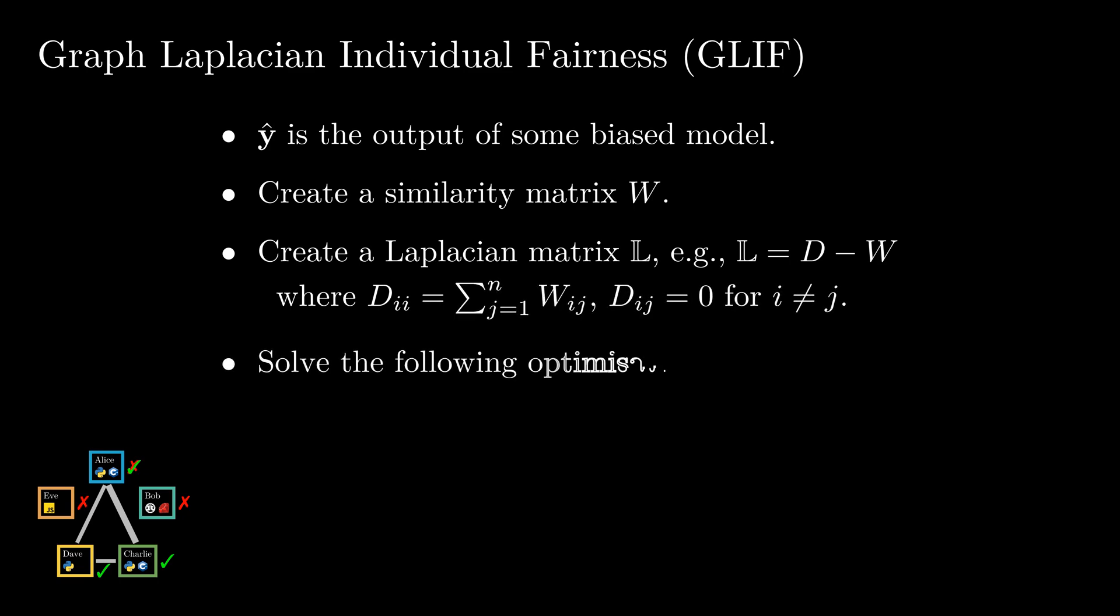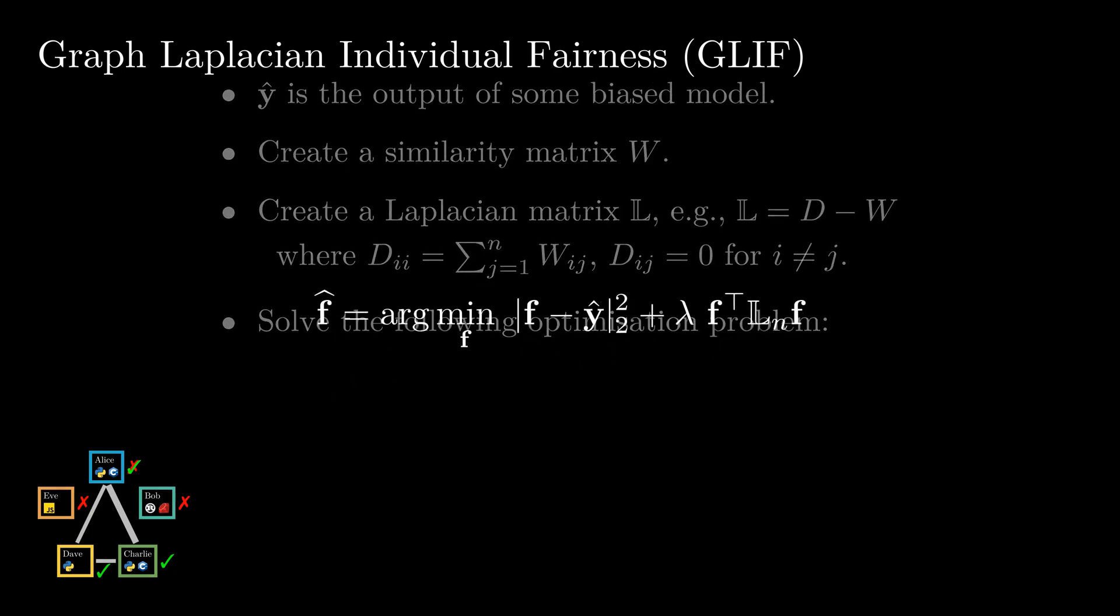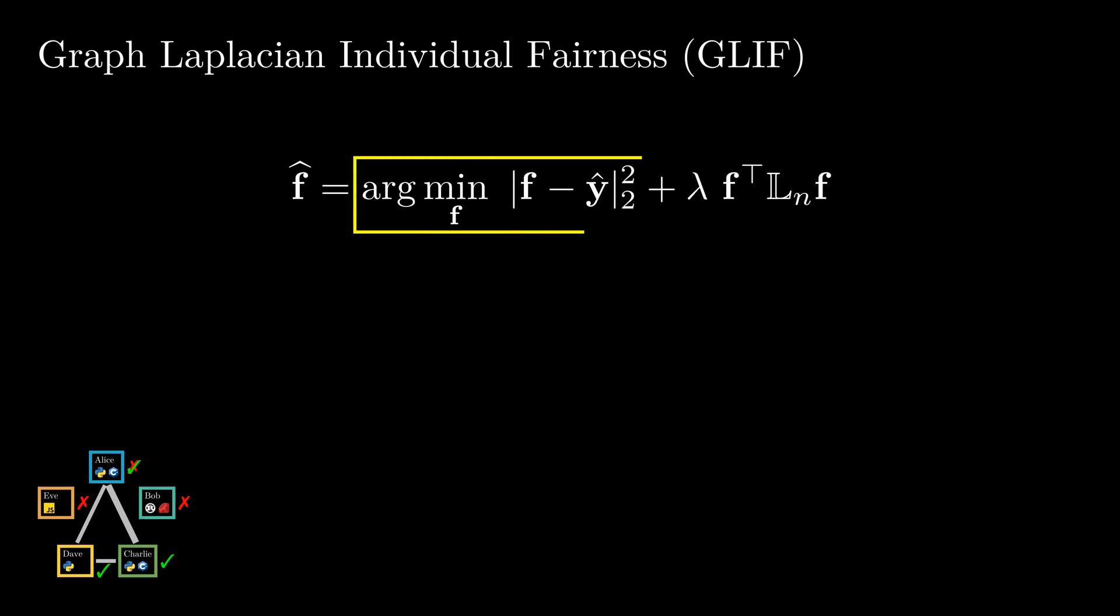After that, we solve the following optimization problem, and store our post-processed predictions in F hat. The first part of the equation ensures that F hat has a high prediction accuracy, and the second part makes the output fair. As this is a nice quadratic optimization problem, it has a closed-form solution.